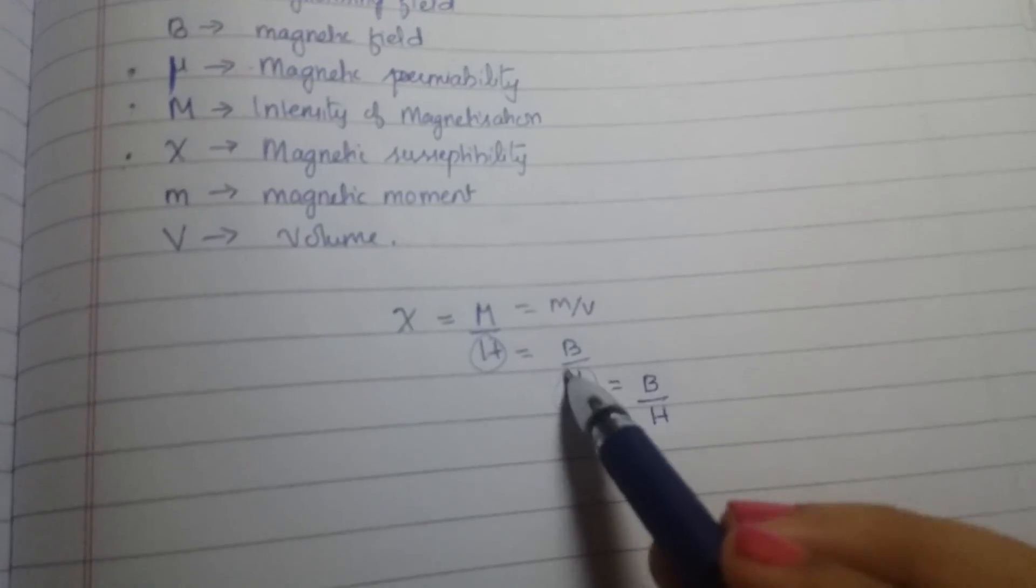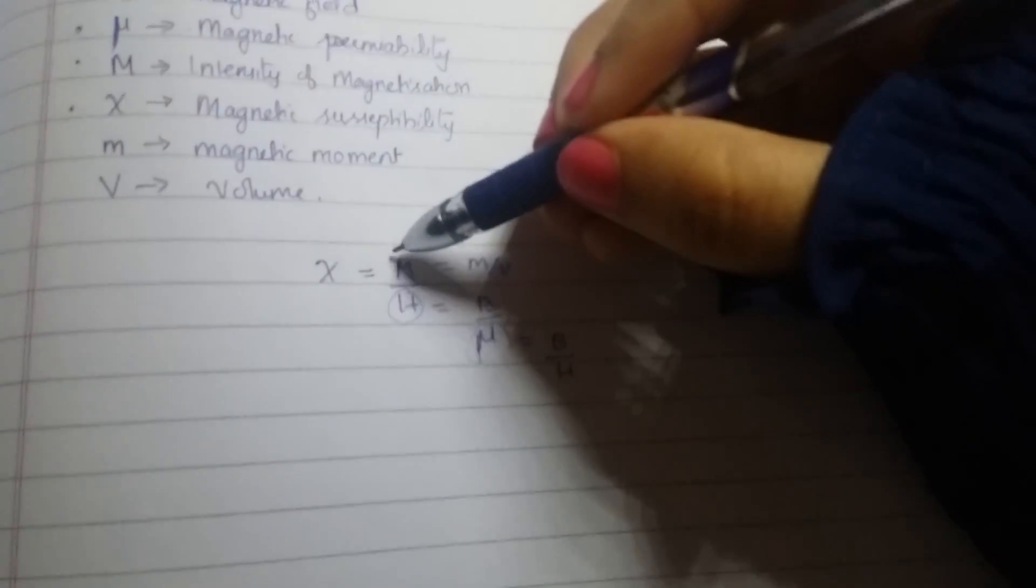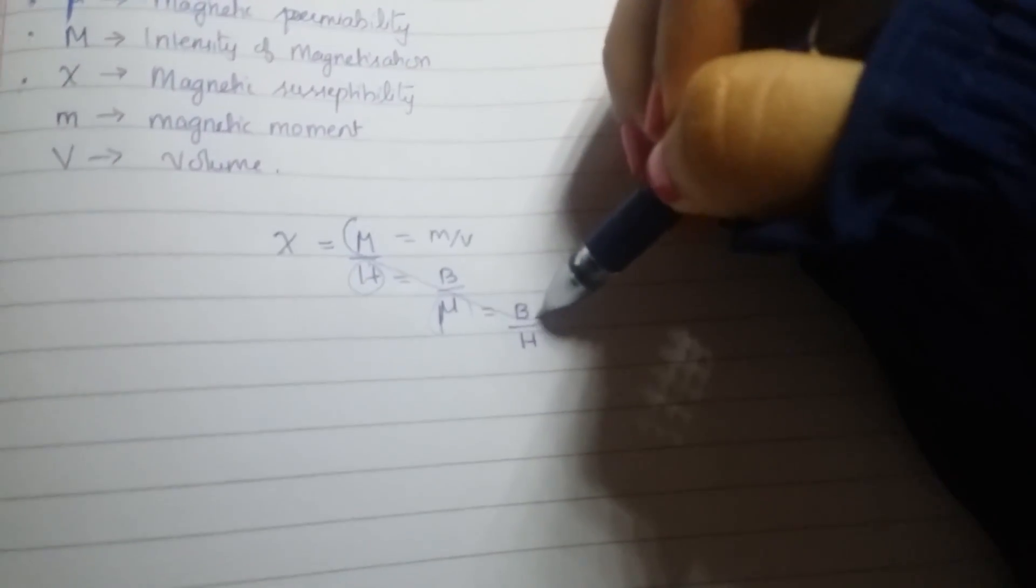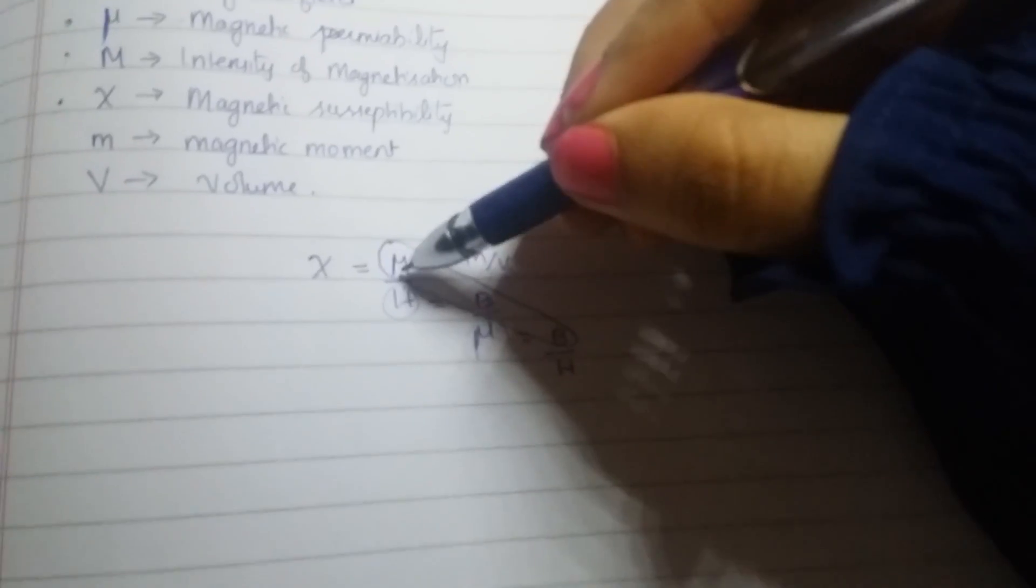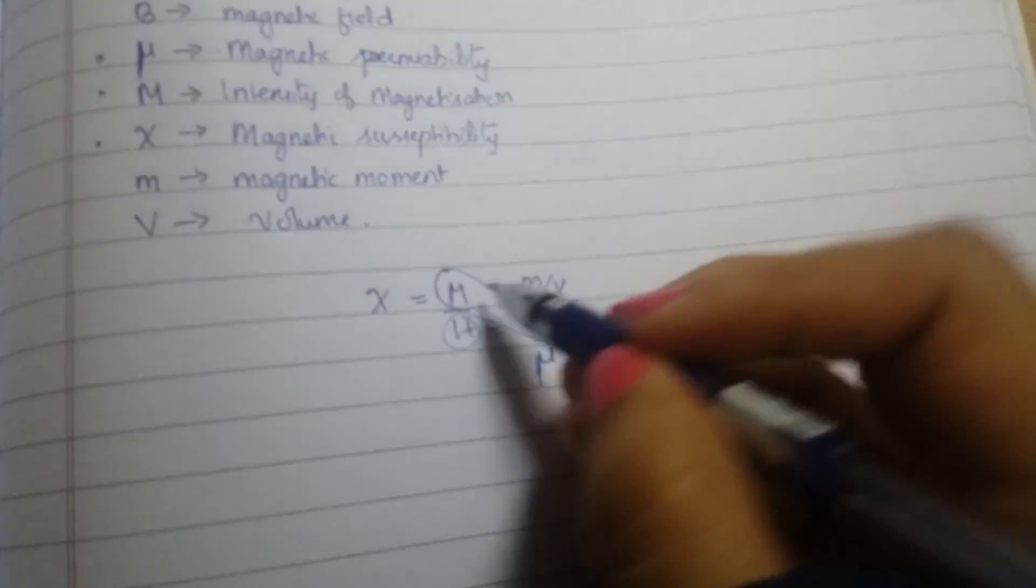So, another easy trick to learn this is, see this, it is like a staircase, right? So, someone is getting down the staircase. Someone is getting down the staircase and we can name it as M.